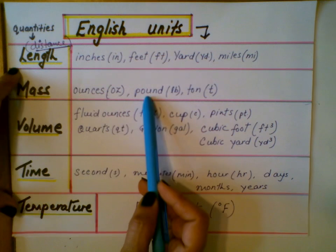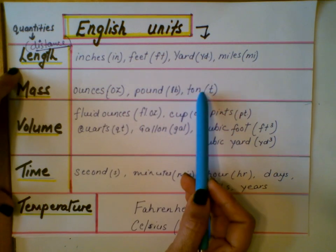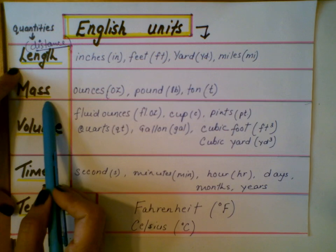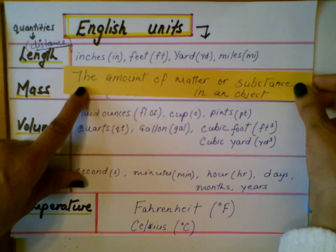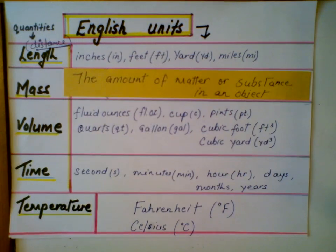Ounces, pound, and tons—these are the English units for measuring mass. Depending on the amount of matter we have to measure, we use different units. Mass is defined as the amount of matter or substance in an object.